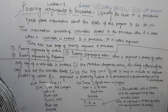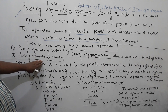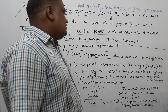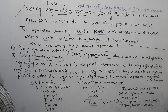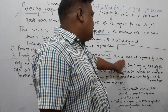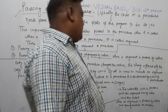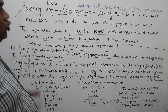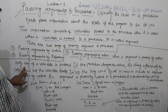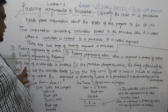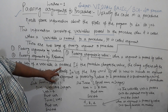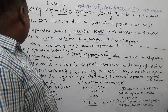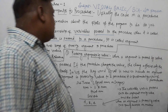There are two ways of passing arguments to a procedure. One is passing arguments by value, and the other is passing arguments by reference. When we pass arguments by value, only the copy of a variable is passed. The original variable itself is not passed — only its copy is passed by value.